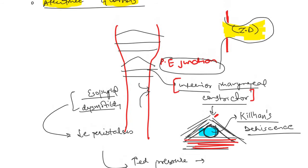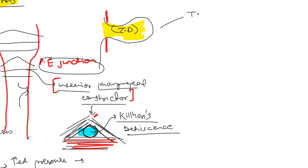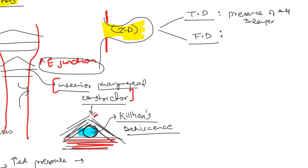Diverticula are classified as true or false based on the presence or absence of all layers. True diverticula contain mucosa, submucosa, and muscularis propria. In Zenker's diverticulum, the muscularis propria is absent — it was the gap through which the diverticulum formed — so only two layers are present, making it a false diverticulum.